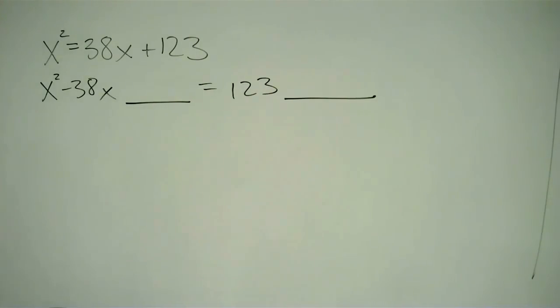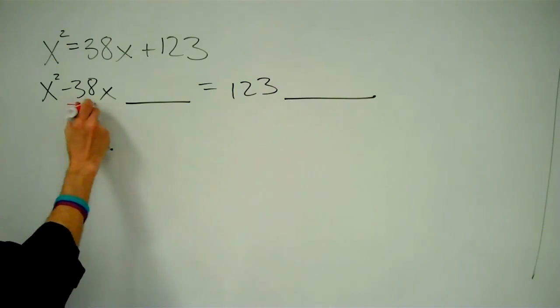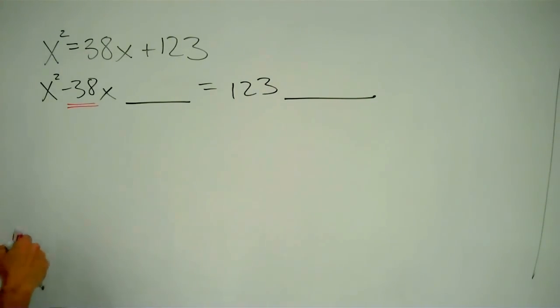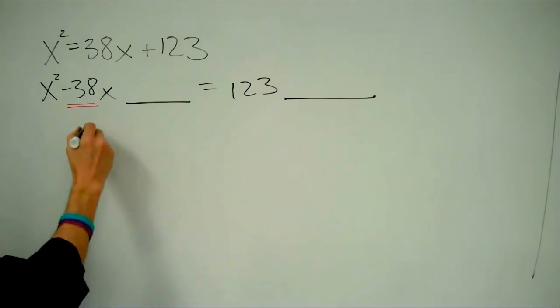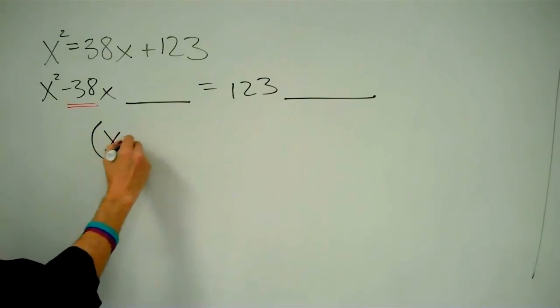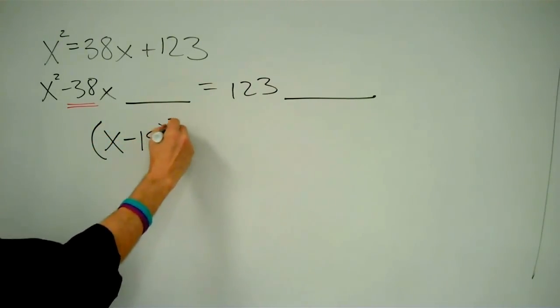Well, let's follow the same method we've done before: look at this coefficient right here, negative 38. We cut that in half to get negative 19. So what we're going to end up with is x minus 19 squared.